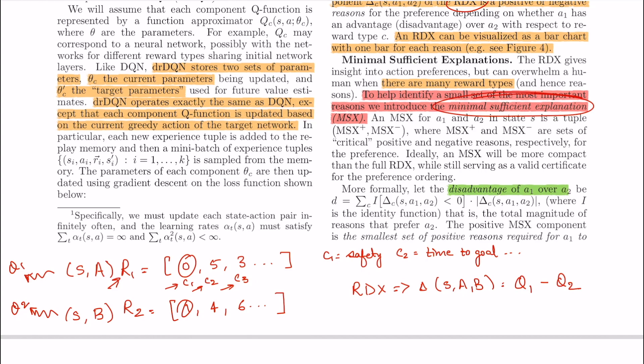Now these rewards can end up giving us Q1 and Q2 which as you can guess is a vector as well. Now RDX or the reward difference explanation is literally the difference between Q1 and Q2. That is the Q value that I would get if I take action A minus the Q value that I would get if I take the action B.